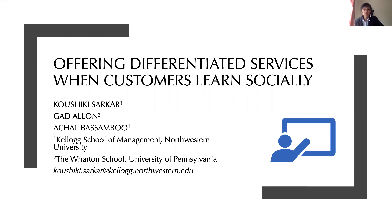Another interesting feature of services is the presence of operational externalities — the decisions of customers not only affect their own service quality, but also that of other customers in the system. The key question we ask is: in scenarios where customers learn about service quality based on information shared by their peers via social learning, is service differentiation still sustainable? Further, should a rational customer even rely on social information, which is typically incomplete, or are they better off using their own experiences with the firm about which they have complete information?